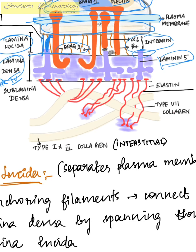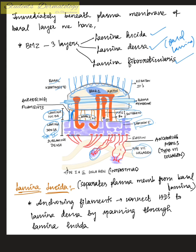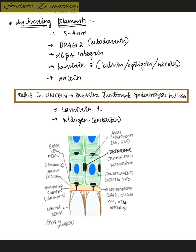In the sub-lamina densa, or lamina fibro-reticularis, anchoring fibrils are the main component. These are curved structures that either terminate in the papillary dermis or loop around and merge back with the lamina densa. The main collagen here is type 7 collagen. The anchoring filaments in the lamina lucida are 3 to 4 nanometers, and the proteins present include BP antigen 2, alpha-6 beta-4 integrin, laminin 5, uncein, laminin 1, and nidogen (entactin).